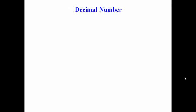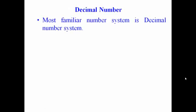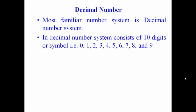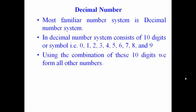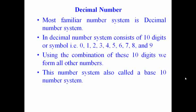Now let's look at the decimal number system. The most familiar number system is the decimal number system. We use this decimal number system in everyday life. The decimal number system consists of 10 digits — that's why it's also called a base-10 number system. Those digits are 0, 1, 2, 3, 4, 5, 6, 7, 8, and 9. These 10 digits are used in the decimal number system. The combination of these 10 digits is used to form any number. This number system is called base-10 because we use a total of 10 digits.